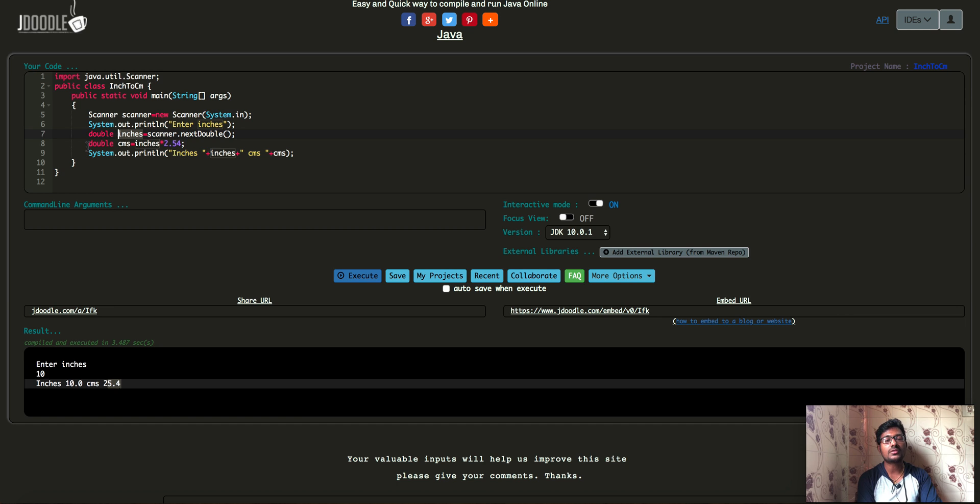And then what we are trying to do is we are trying to convert this inches to centimeter. Inches into 2.54. If the user has given 10 inches means 10 into 2.54 the centimeters would be 25.4. If the user has given hundred means hundred into 2.54 then 254 centimeters. All right, 254 centimeters. So that would be converted and would be stored in CMS.